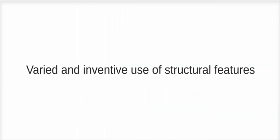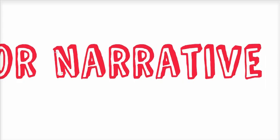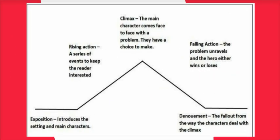What we're going to look at today is this phrase: 'varied and inventive use of structural features.' When you write a story or a descriptive piece, what tends to happen is you have lots of ideas and you just write. But it's important to think carefully about how you structure your writing — what happens where and why. We talked briefly in the last video about structuring narrative writing, essentially following Freytag's pyramid — having something exciting happen at the beginning, building up to a really tense moment, and then finishing. That's one approach.